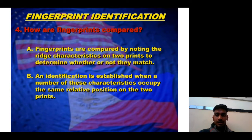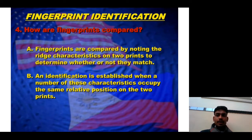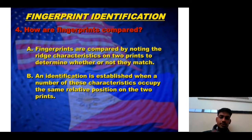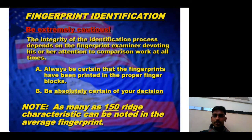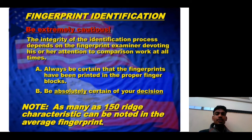Fingerprints are compared by noting the ridge characteristics on two prints to determine whether or not they match. An identification is established when a number of these characteristics occupy the same relative position on the two prints. The fingerprint examiner must be extremely cautious, devoting full attention to the comparison at all times.